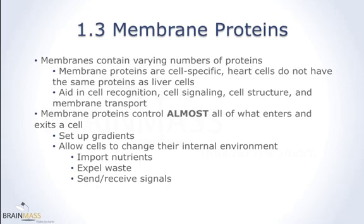Proteins play a bunch of very important roles. First, they aid in cell recognition — they let your immune system know that your heart cells belong there so it doesn't attack them. Proteins also play a role in cell signaling, helping hormones put out by the pancreas interact with cells in muscles or fat. They're very important to cell structure, determining the shape and strength of a cell. And most relevant here, proteins control almost all of what enters and exits a cell, because most substances can't get through the lipid bilayer without assistance. Cells use these proteins to set up gradients, allowing them to import nutrients, expel waste, and send and receive signals.